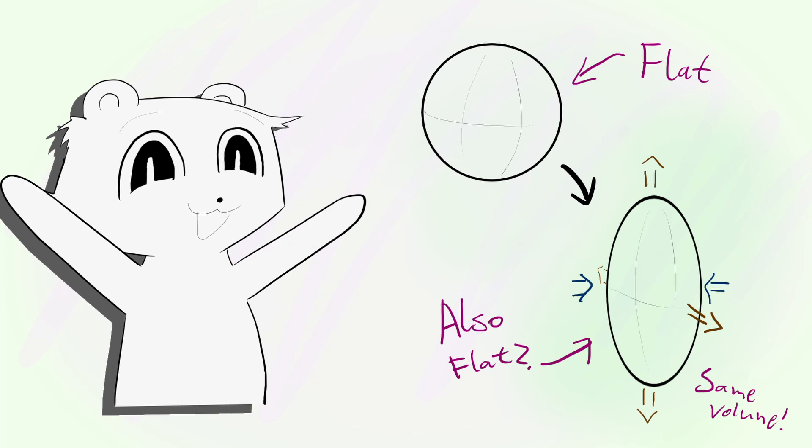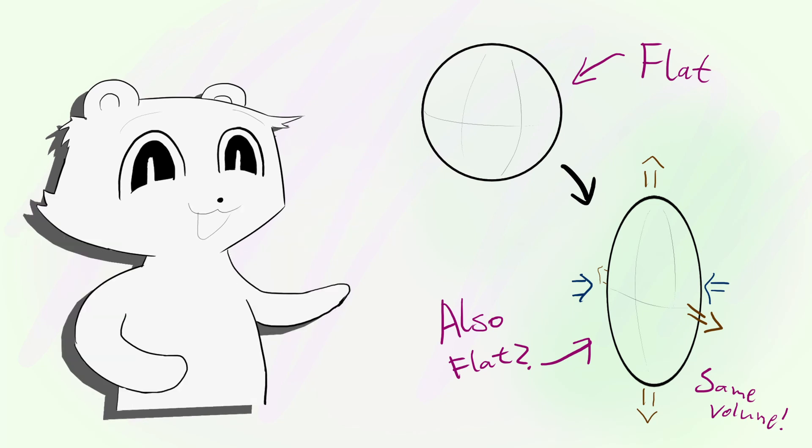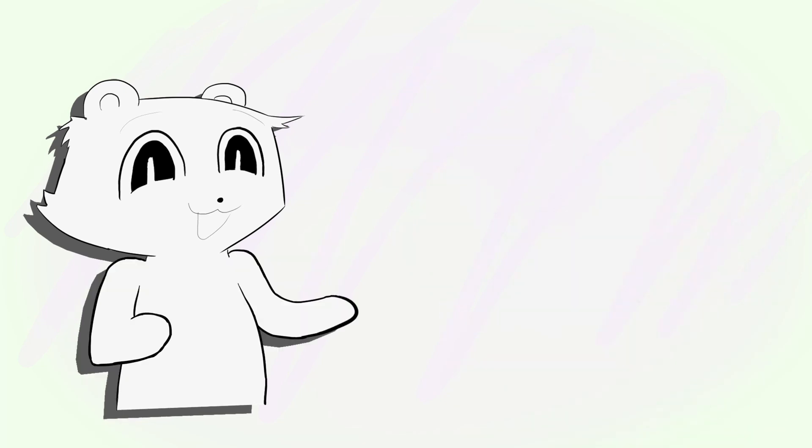According to our definition, the space must be flat, but to us, it just isn't. Clearly, the area definition isn't capturing every little detail about curvature. We're still missing something. But what now?